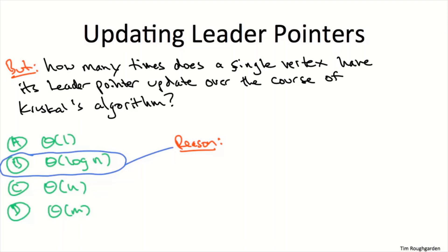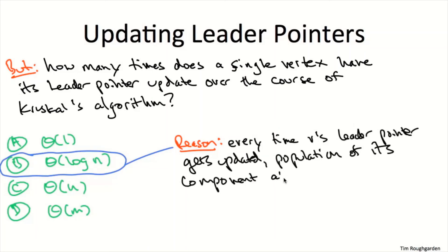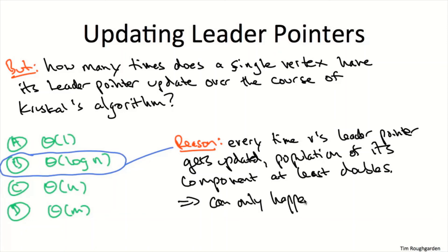Every time a vertex has its leader pointer updated, the population of the component to which it belongs is at least twice as large as before. You start in a connected component of size one, and the component won't have more than N vertices. So the number of doublings you might endure is at most log base 2 of N. That bounds how many leader pointer updates any vertex will see across the entire run of Kruskal's algorithm.